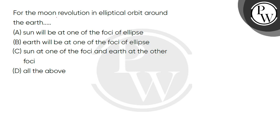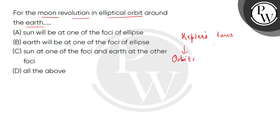Let's read the question for the moon's revolution in elliptical orbit around the Earth. Here we will try Kepler's laws of planetary motion. Kepler gave three laws. The first law is called the law of orbits, the second law is called the law of aerial velocity or the law of areas, and the third law is called the law of periods.